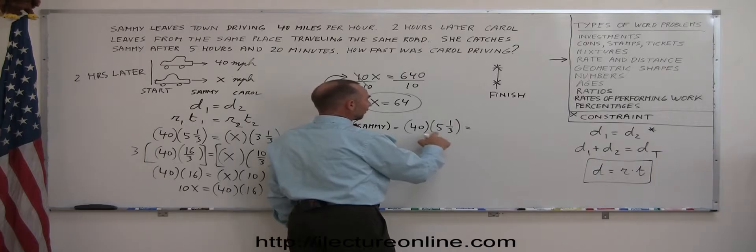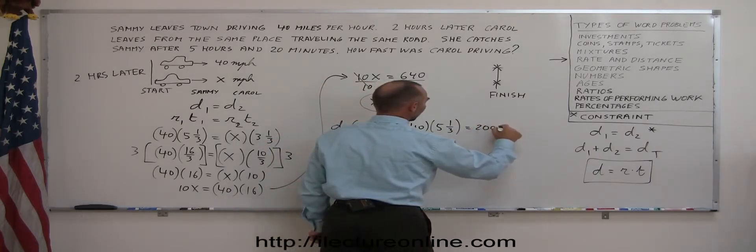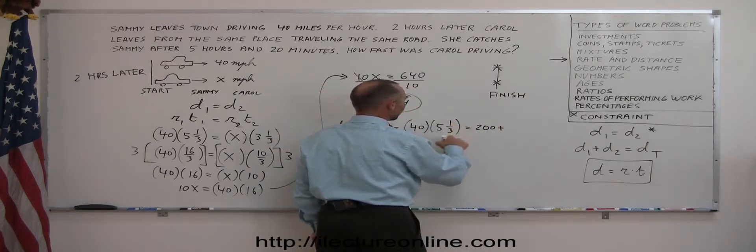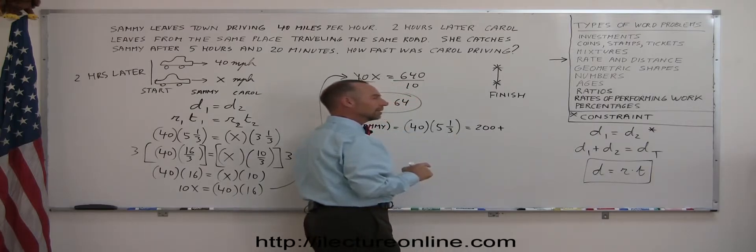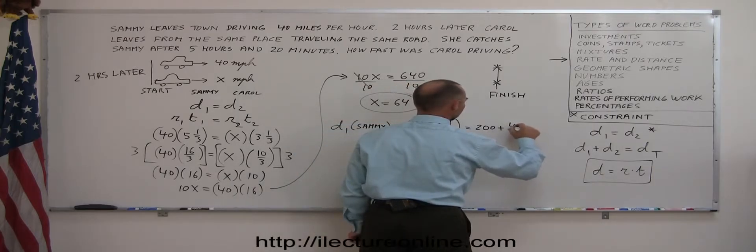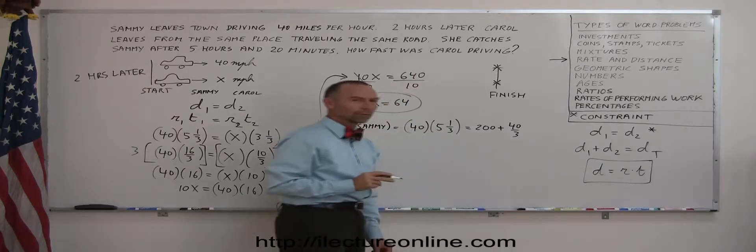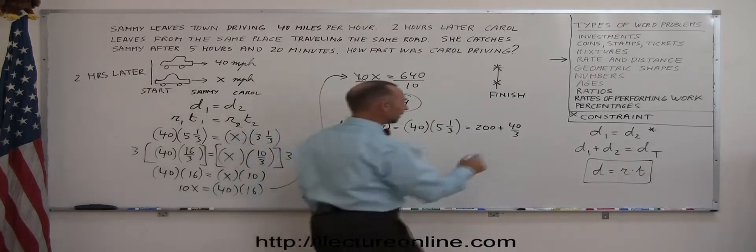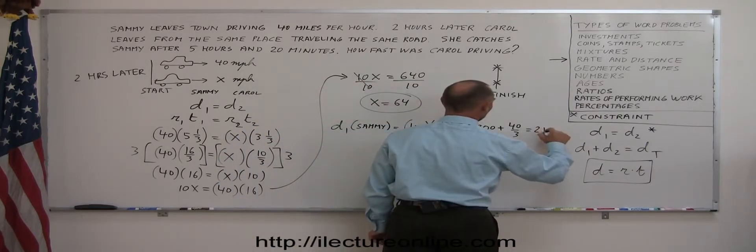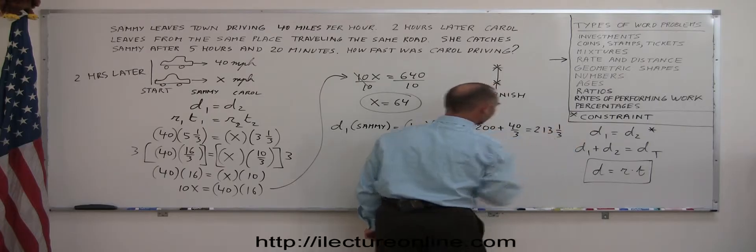So 40 times 5, that's 200. Plus 40 times a third, that's 40 divided by 3. And 3 goes into 40, 13 and a third time. So that would be 213 miles and a third.